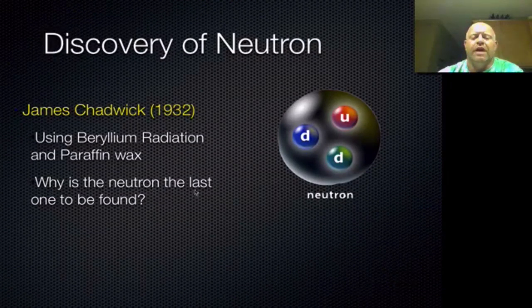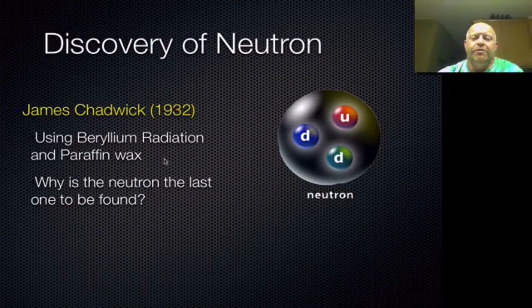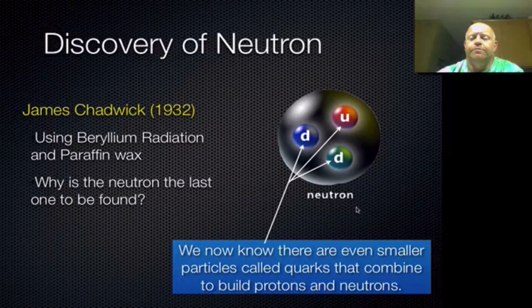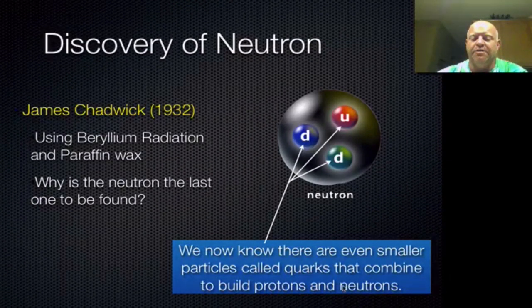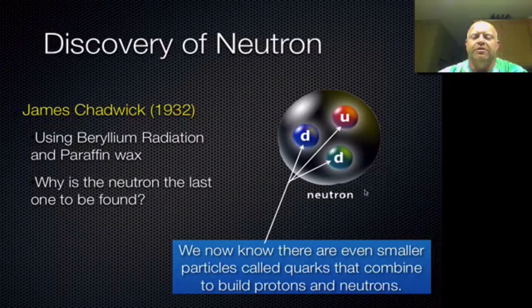Why was the neutron the last one to be found? The first two particles were found because they had a charge — electrons are negatively charged, protons are positively charged — and we're able to use that charge to pull them out and identify them. Neutrons are neutral, so with no electronic charge, they're much harder to determine. As a side note, we now know that inside neutrons and protons there are even smaller particles called quarks. These quarks make up the actual protons and neutrons. It's not the focus of this unit, but it is interesting that we do have even smaller subatomic particles that map out how the neutron and proton are made. The electron, interestingly, is found to be more on the size and scale of the quarks.